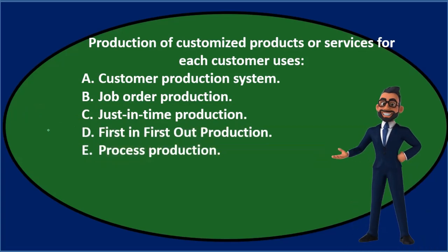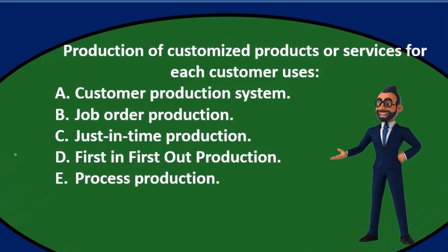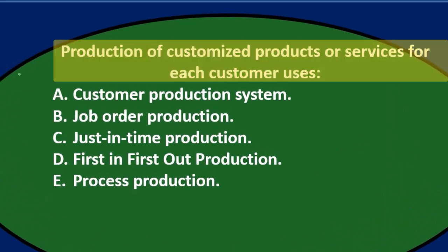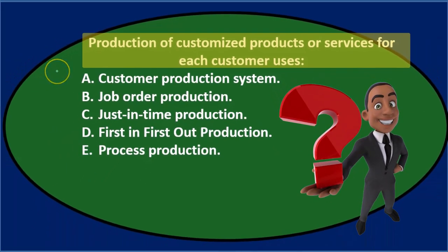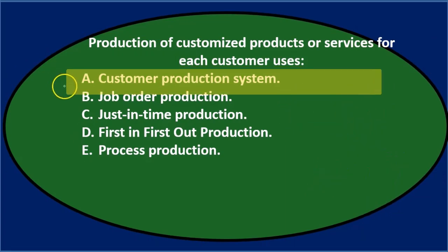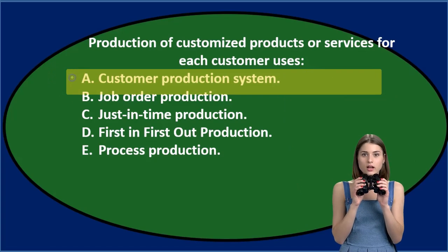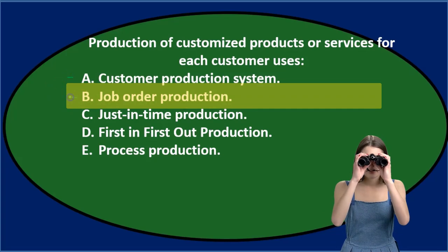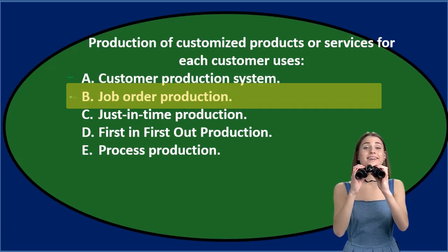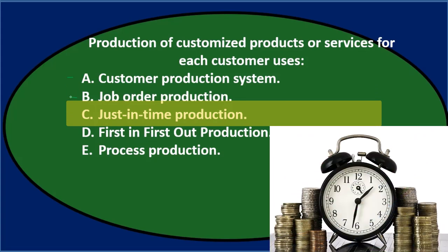Let's go through this using the process of elimination. A) customer production system — that sounds kind of reasonable, I'll keep it for now. B) job order production — that's the kind of system we've been working with in these questions, so I'll keep that one. C) just-in-time production — that's possible, I'll keep that one for now as well.